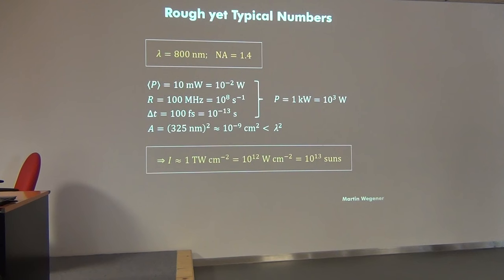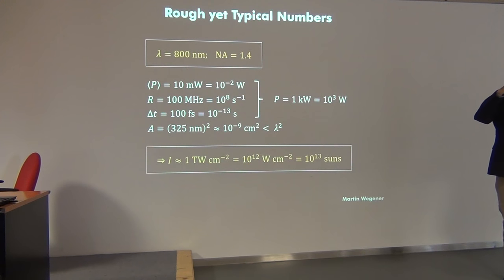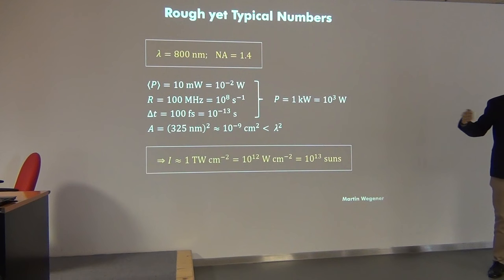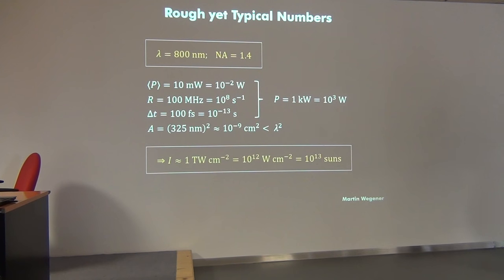When I entered this field I thought two-photon absorption would be very difficult — but at these intensities, anything shows two-photon absorption. The problem is rather avoiding other crazy processes. Writing happens at a certain threshold, but if you go up in power by a factor of two or three, multi-photon absorption kicks in and you get micro-explosions. There's a fairly small window between nice writing and destruction of the structure, but laser power is well controlled today.